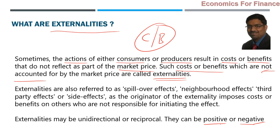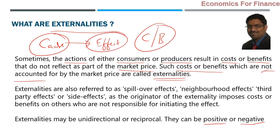The key point to note: actions are done by somebody, but the impact of those actions is on completely different persons or groups or society as a whole. Those externalities are not accounted for in the market price — the market only looks at real costs incurred and charges a price after adding profit, but does not account for costs indirectly imposed on others or society. The cause and effect are on different people: who is causing is different, and who gets the effect is different.